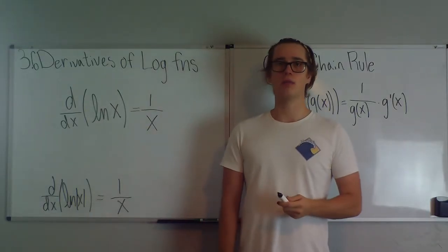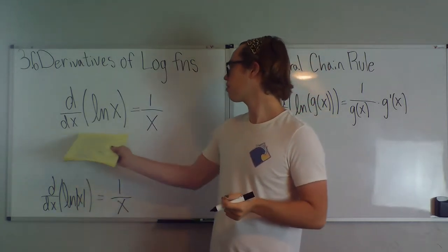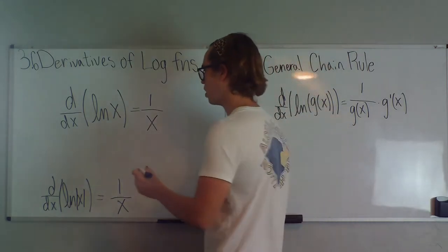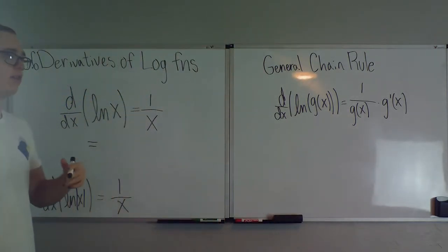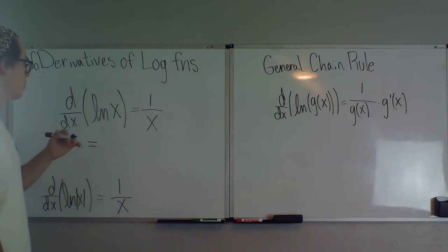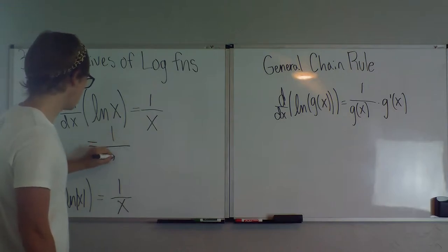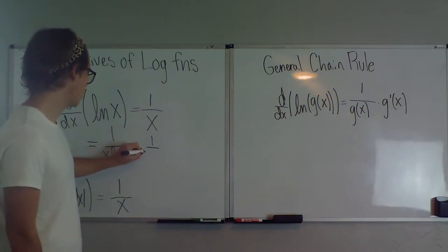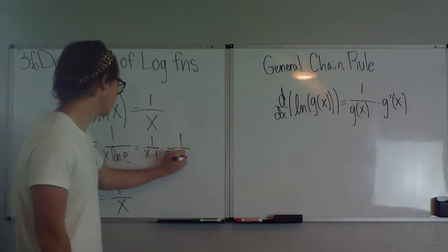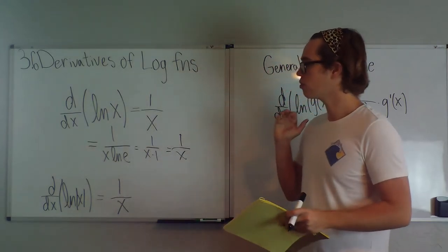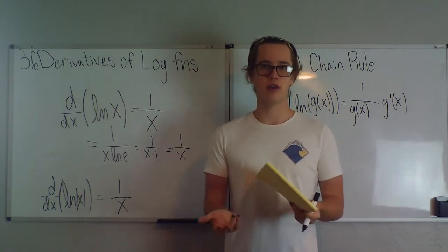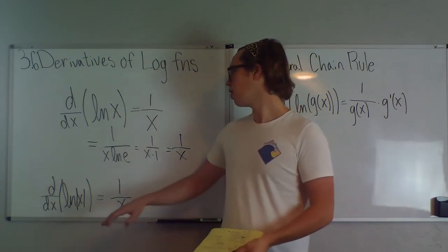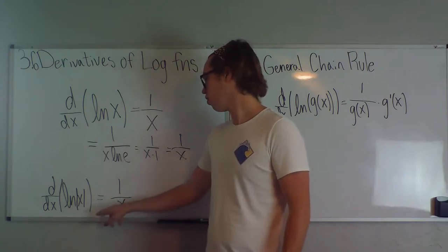From this property we get some nice results. First, d/dx of ln(x) equals 1 over x. We know d/dx of ln(x) equals d/dx of log base e of x, which gives 1 over x times ln(e). Since ln(e) equals 1, this simplifies to just 1 over x. We'll also need to know that the derivative of ln of the absolute value of x is also equal to 1 over x — pocket that away for Math 2B integrals.